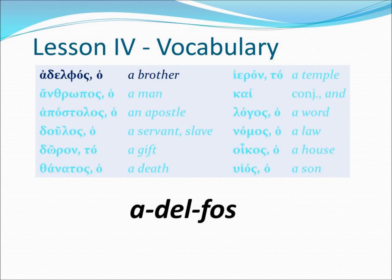The first word on our list is adelphos. According to the article, it's a masculine noun, translated 'a brother.' If we include the article in front of the noun, it would be ho adelphos, or 'the brother.' In Greek, we either have an article — the word 'the' — or it's anarthrous, meaning without the article, in which case it would be 'a.'